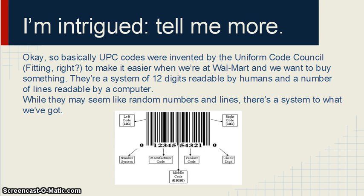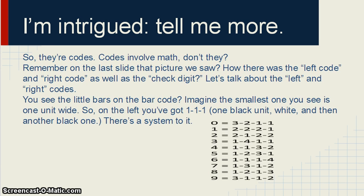They're composed of 12 digits, which we can see, and a number of lines, black and white spaces — all that fun stuff that are readable by the computer. They may kind of seem random, but they're not. There is a system to it. They're codes, and codes involve math.